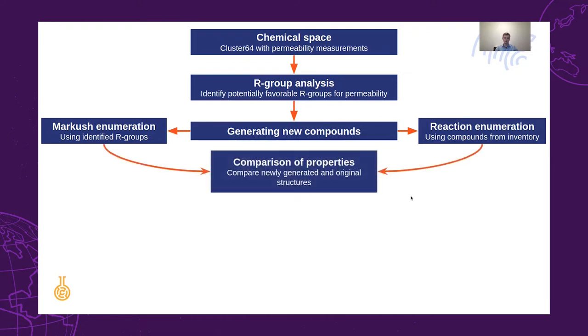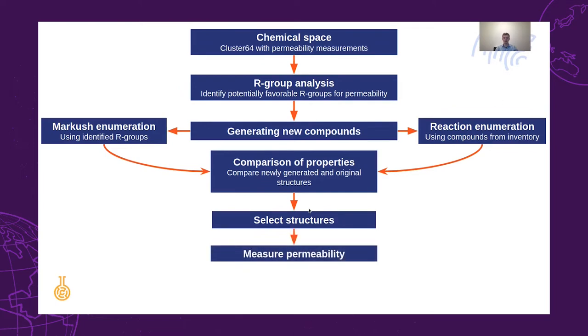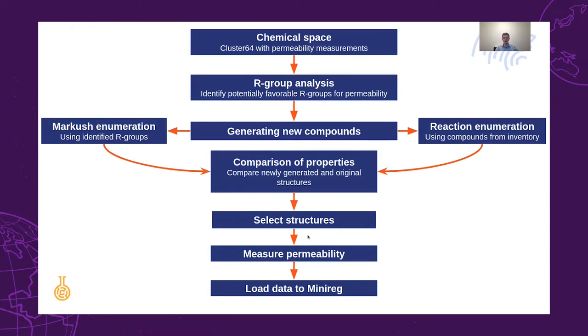The co-generated structures will be compared with properties like logD and pKa values, and then we will select the structures which will be hypothetically measured for permeability, and then we will load the resulting data to the image. So now let's see this workflow in IGC and Plexus Connect.